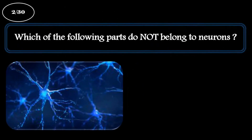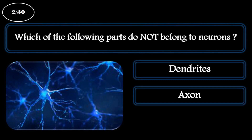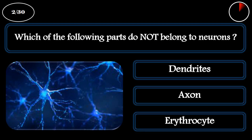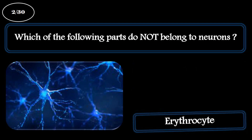Question 2. Which of the following parts does not belong to neurons? A: Dendrites. B: Axon. C: Erythrocyte. The correct answer is erythrocyte.